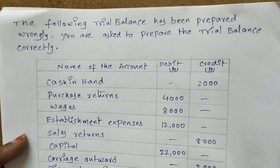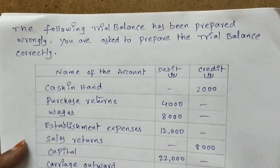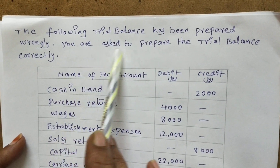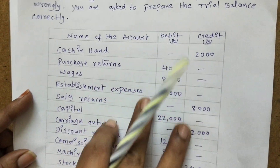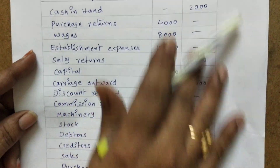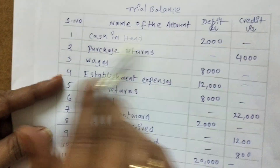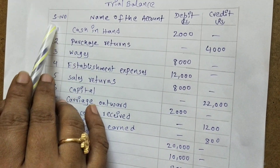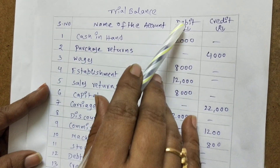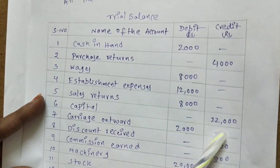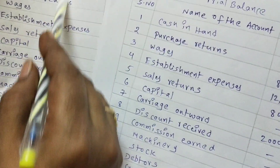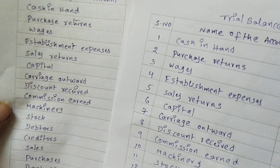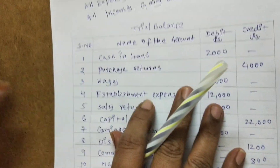Hello everyone. In this video I am going to explain about trial balance — how to prepare a trial balance. The following trial balance has been prepared wrongly, and we are asked to prepare it correctly. So we have to prepare the correct trial balance. This is the pro forma of the trial balance; it has four columns. The first column is for serial number and name of the account, the third column for debit balance, and the fourth column for credit balance. First, note down all the items in the second column.